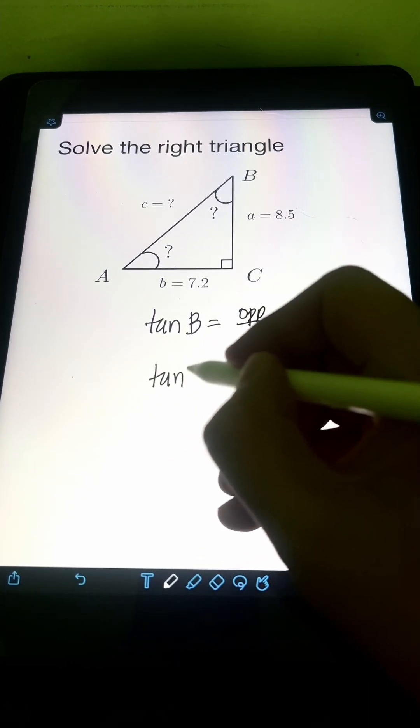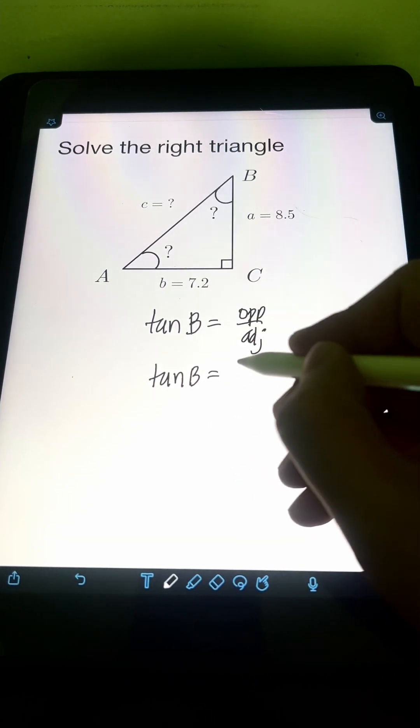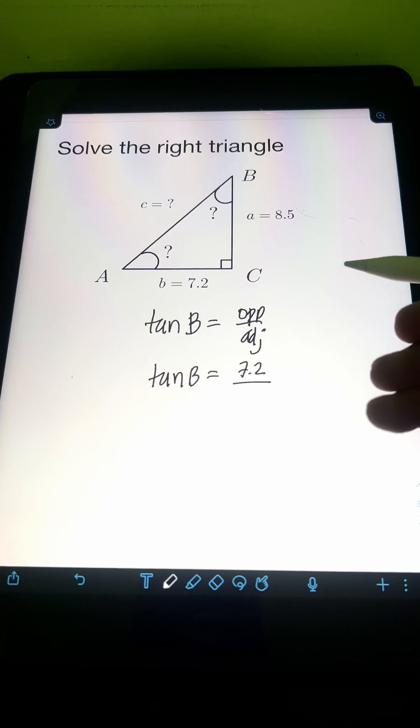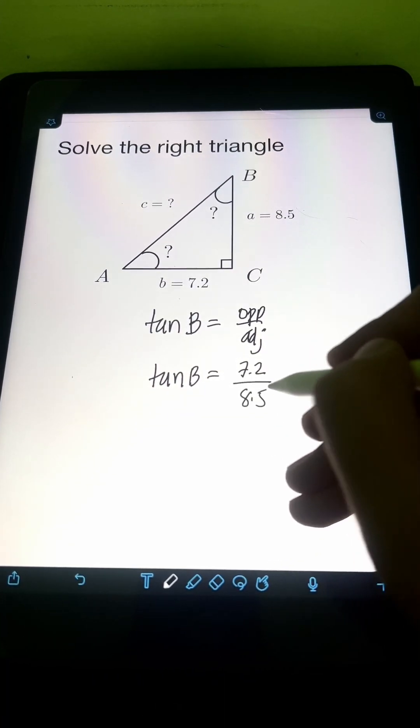So we have tan B equal to, this time the opposite side to angle B is B equal to 7.2 over the adjacent side to B, this time it's A which is 8.5.